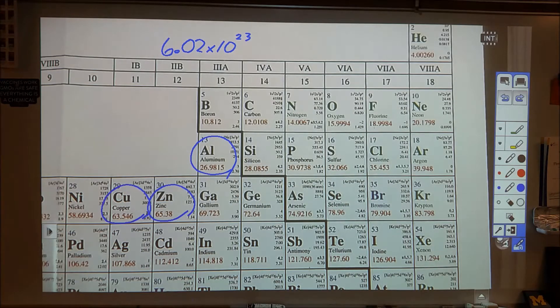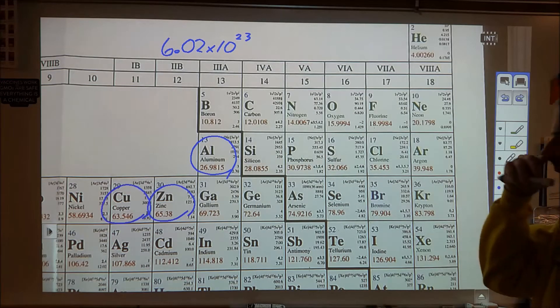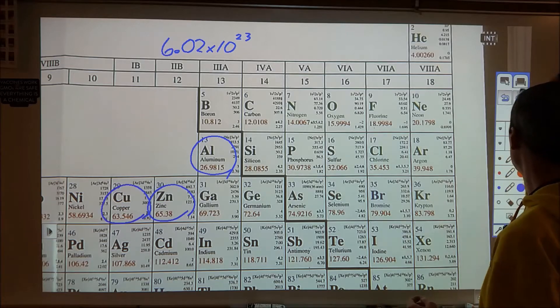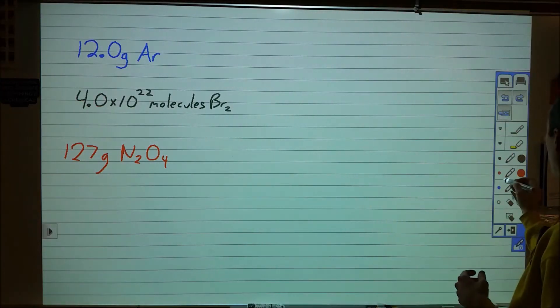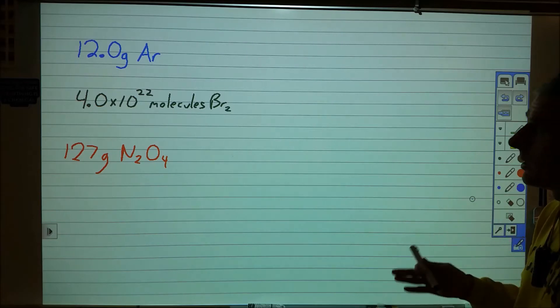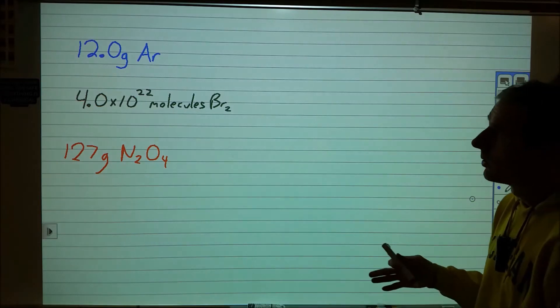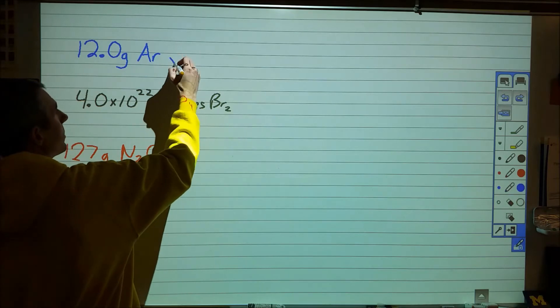So what I want to do is take that and give it a little framework here for how to do some conversions involving grams and moles and things like that. So we've set up three different questions. The first two in black and blue here are change that into moles. So 12.0 grams of argon change to moles.